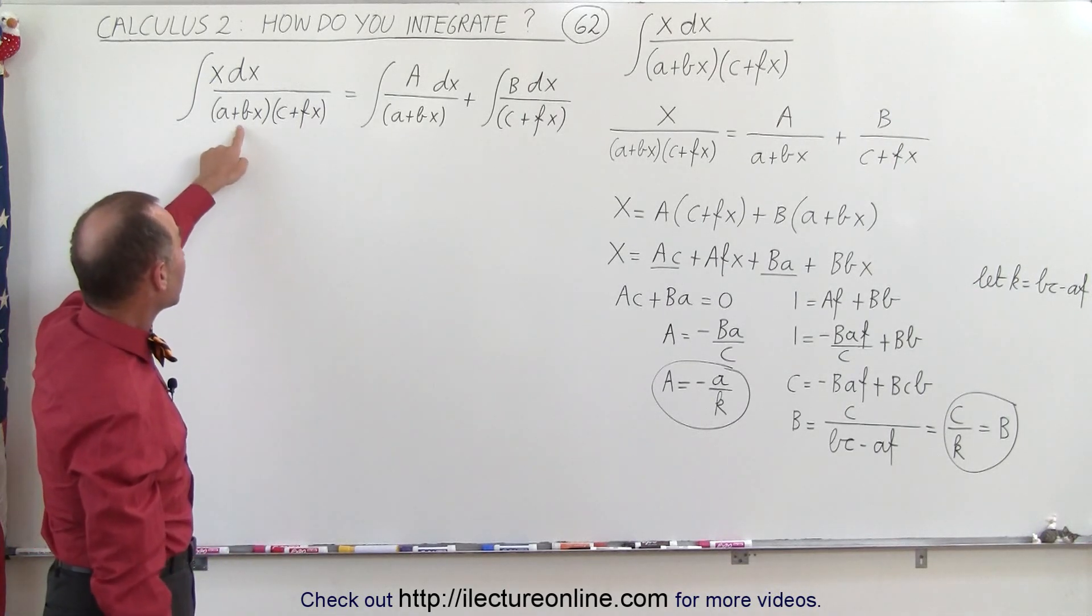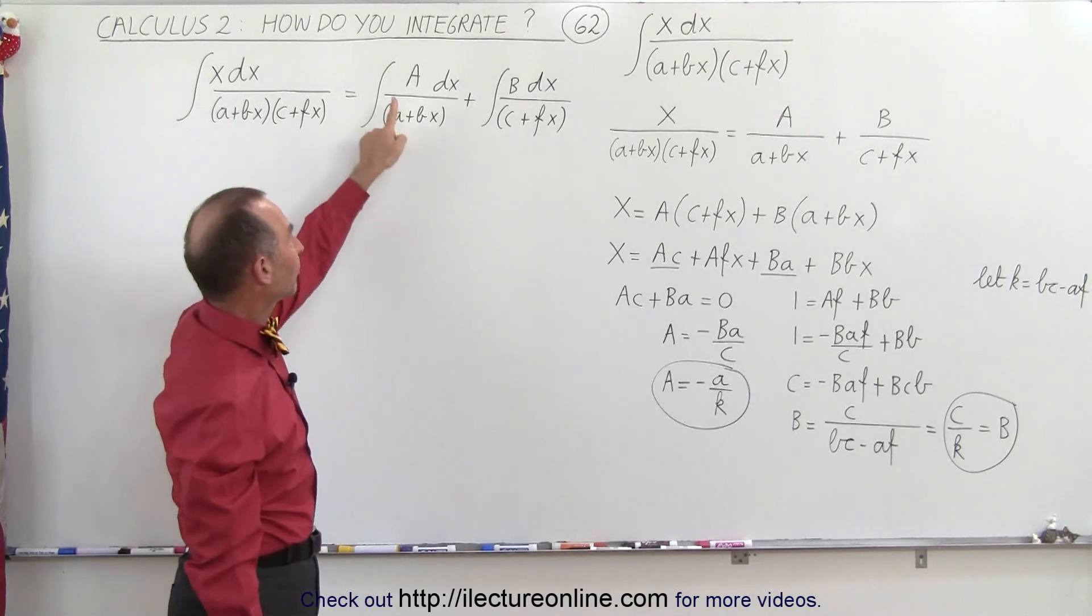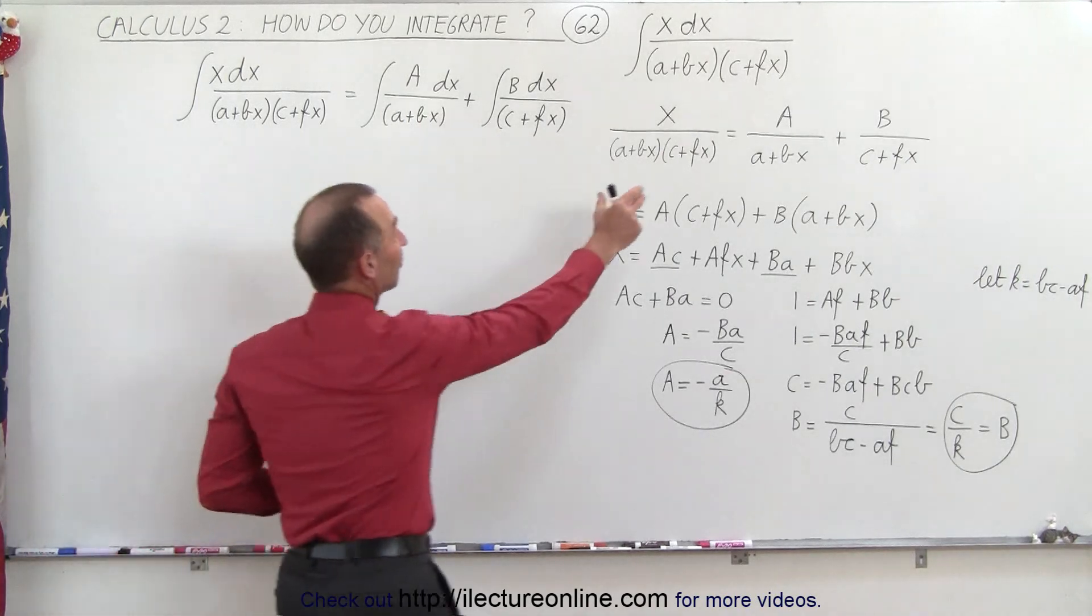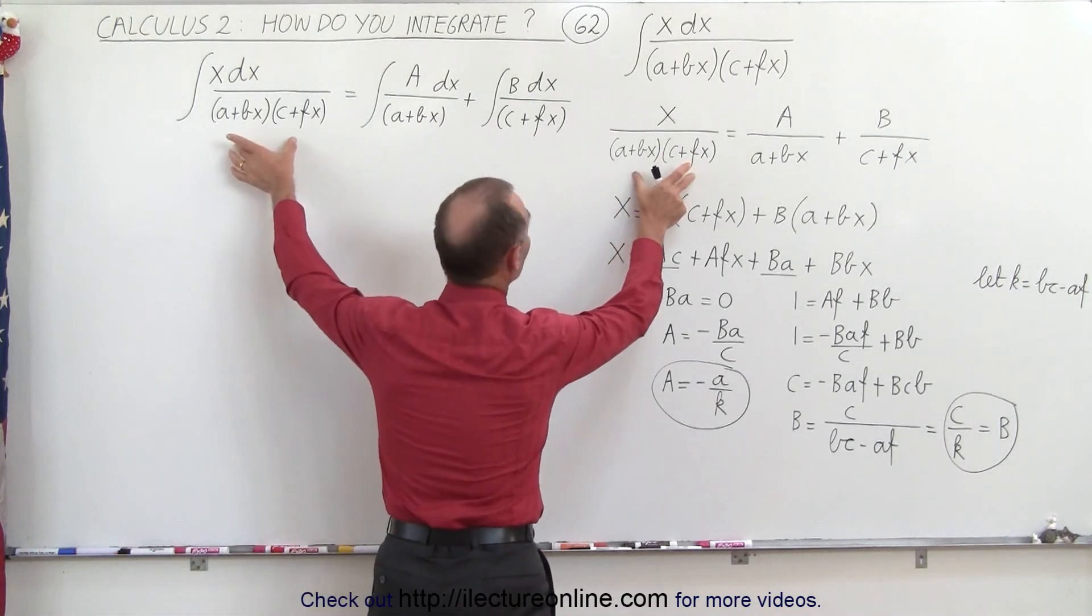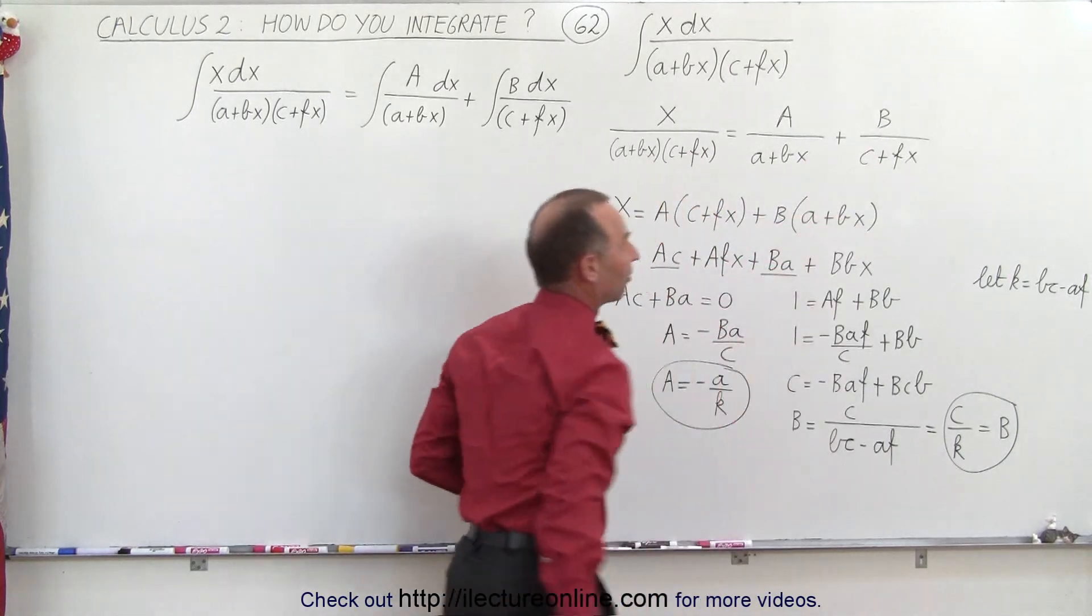So instead of writing the integral like this, we're going to write it as a sum of two integrals and we have to decide what A and B are equal to, which means that x divided by the denominator must equal A over a plus bx plus B over c plus fx.